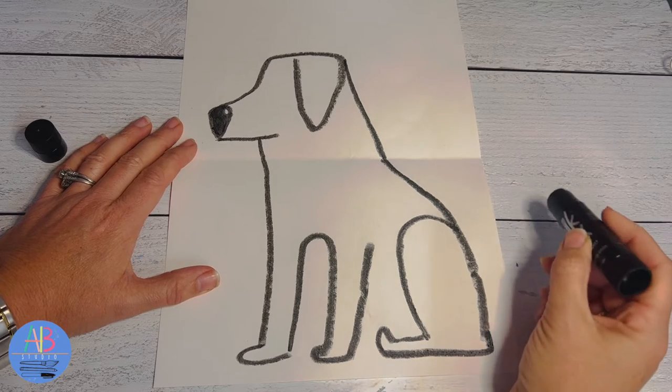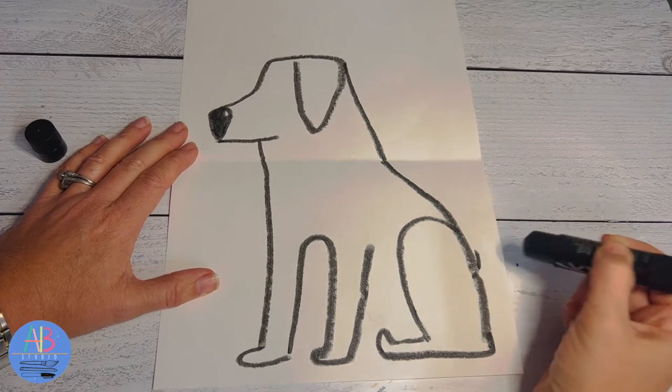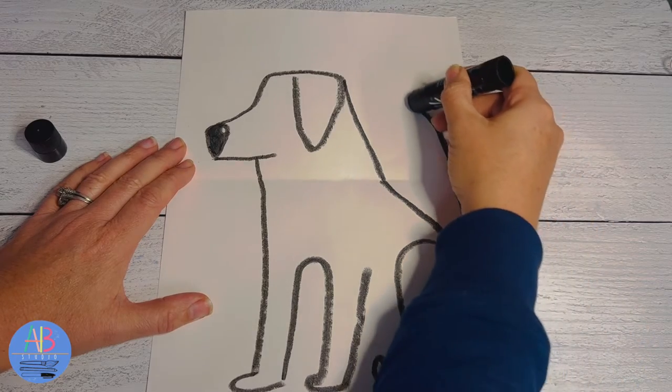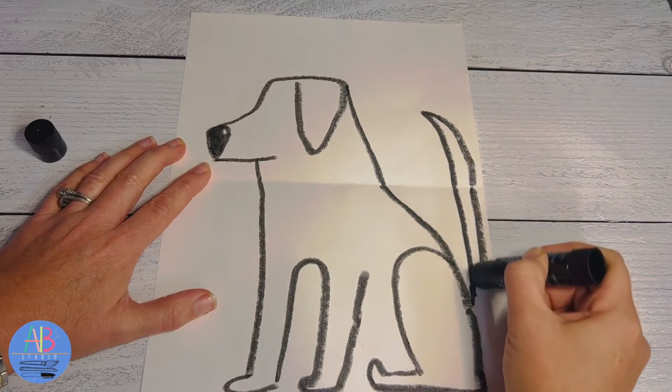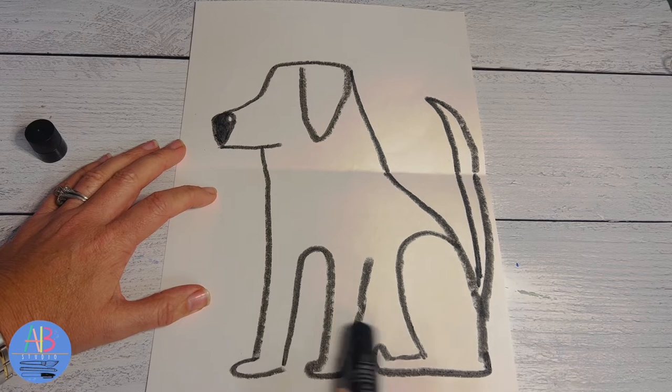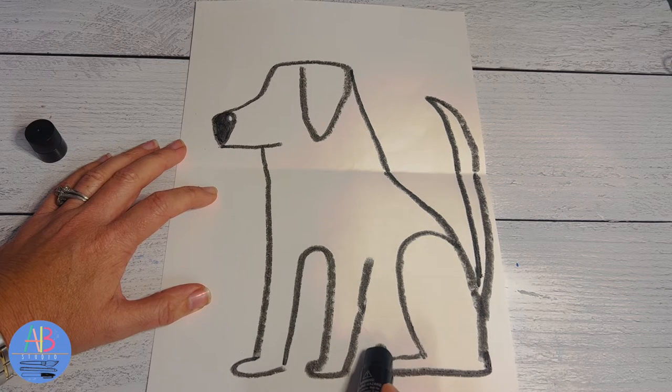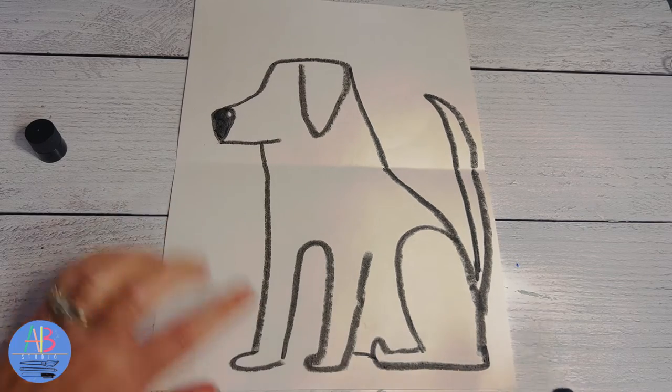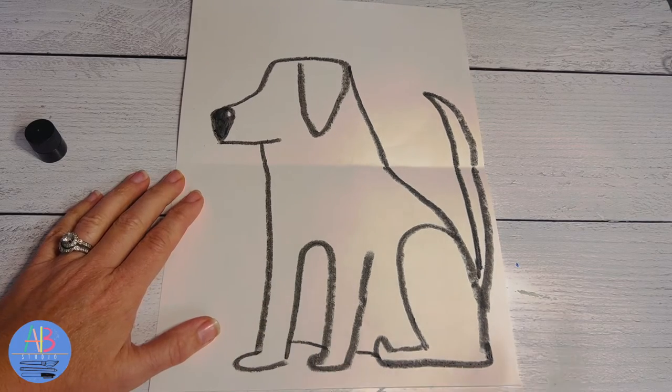And then back here we're going to add his tail. A dog's tails are not curvy like a cat's tail. And then the last few details, we're going to make it look like his body is back here. So from foot to foot we're just going to draw a line, stop, jump over the foot and draw a line.